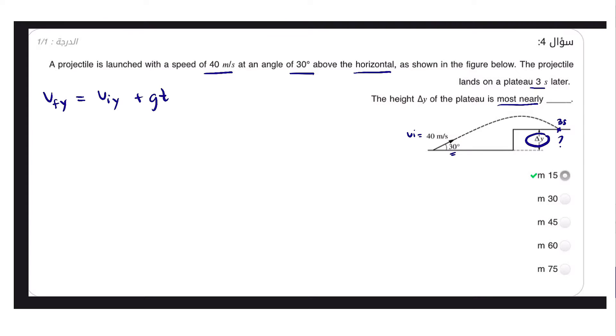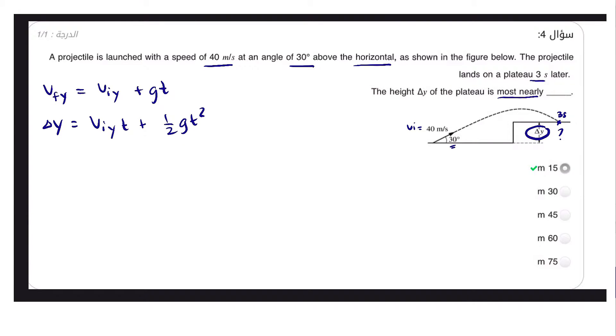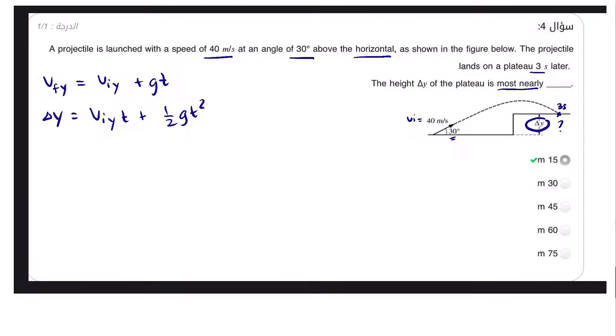The second equation is Δy = viyt + ½gt². The third equation is: the square of the final vertical velocity equals the square of the initial vertical velocity plus 2gΔy.